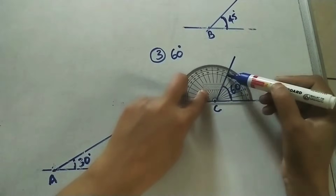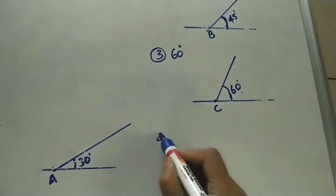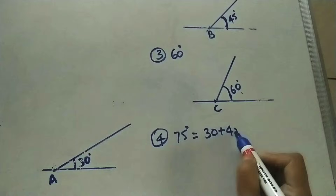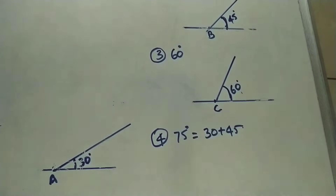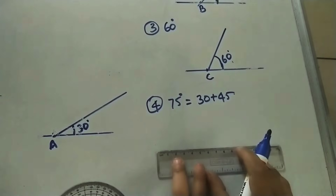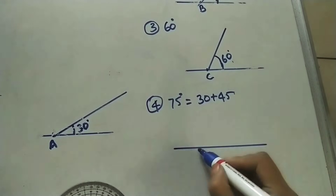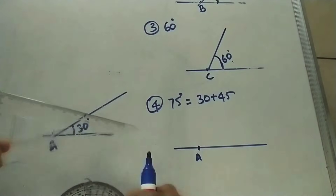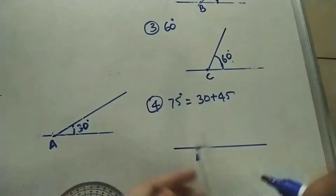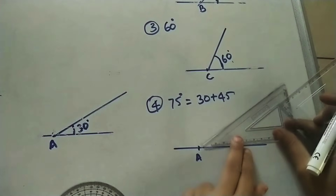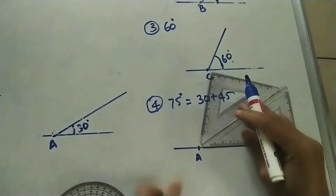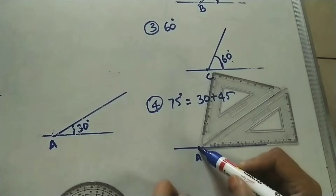Next angle is 75 degrees. We can do 75 as 30 plus 45, so we combine both set squares. Draw a horizontal line and mark at a point. I take the 30-degree set square — this side is 30 degrees — and the 45-degree set square — this side is 45 degrees. Placing them together: this is 30 degrees on one side and 45 degrees here, keeping the scale so the line passes through the point.